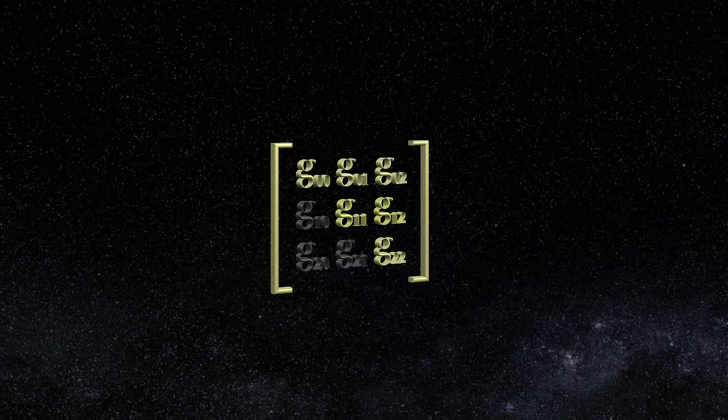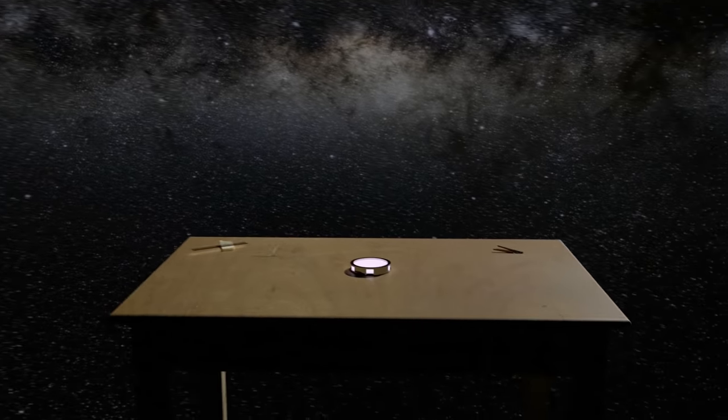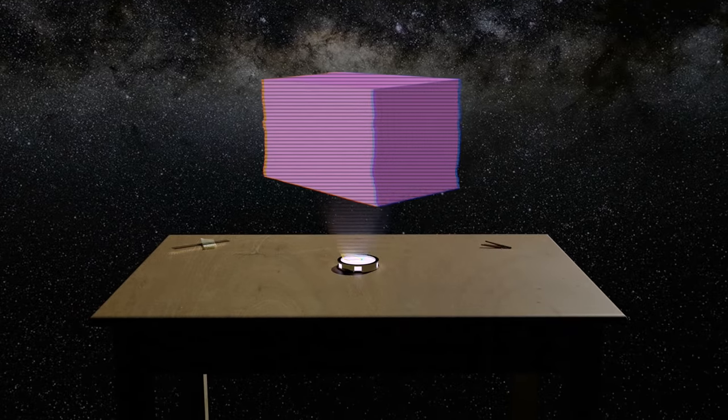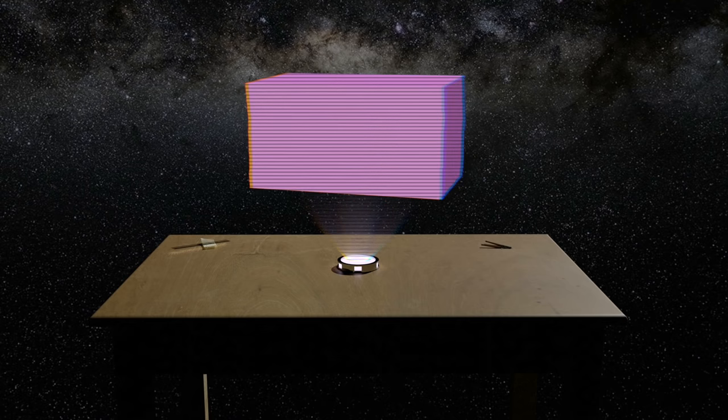Now, as with our two-dimensional case, we're going to start out with a flat surface for our map, which, in three dimensions, is just your conventional Euclidean 3D space.